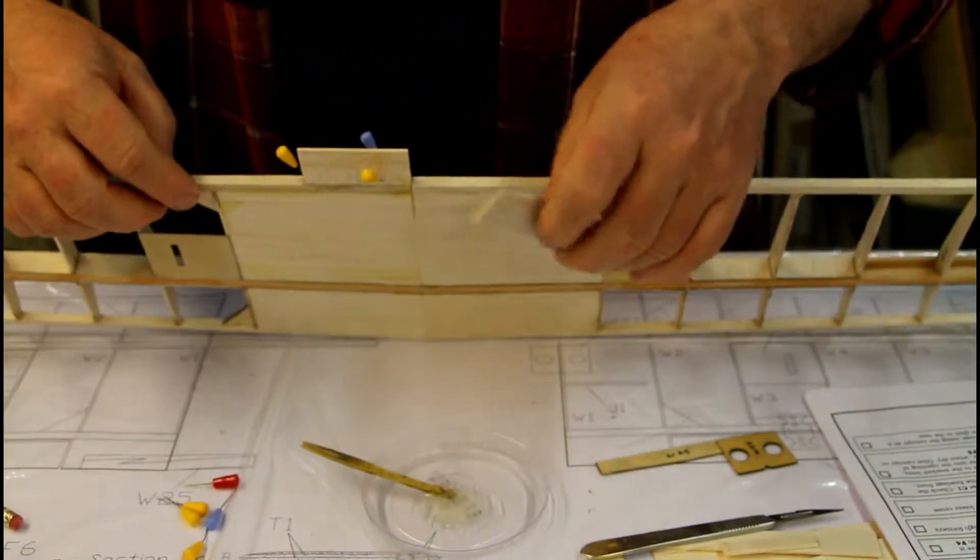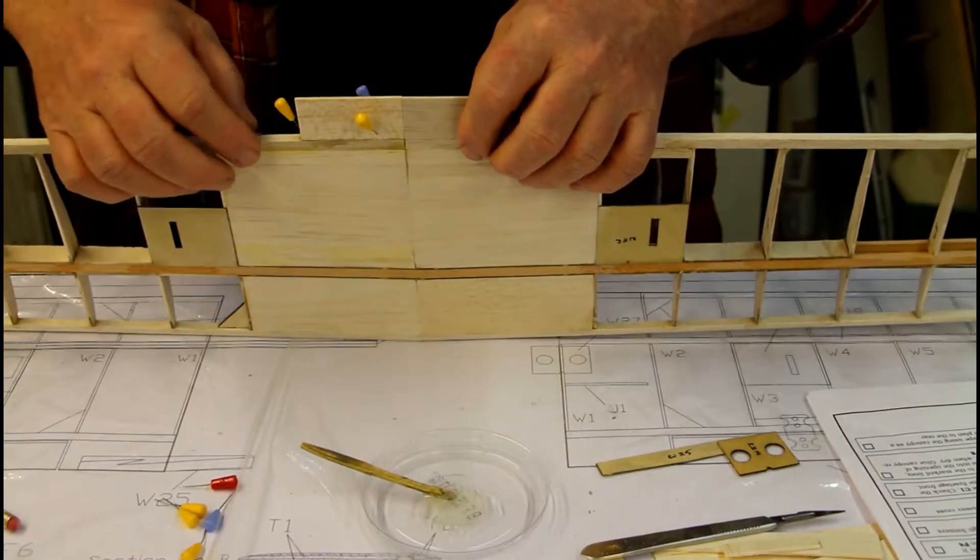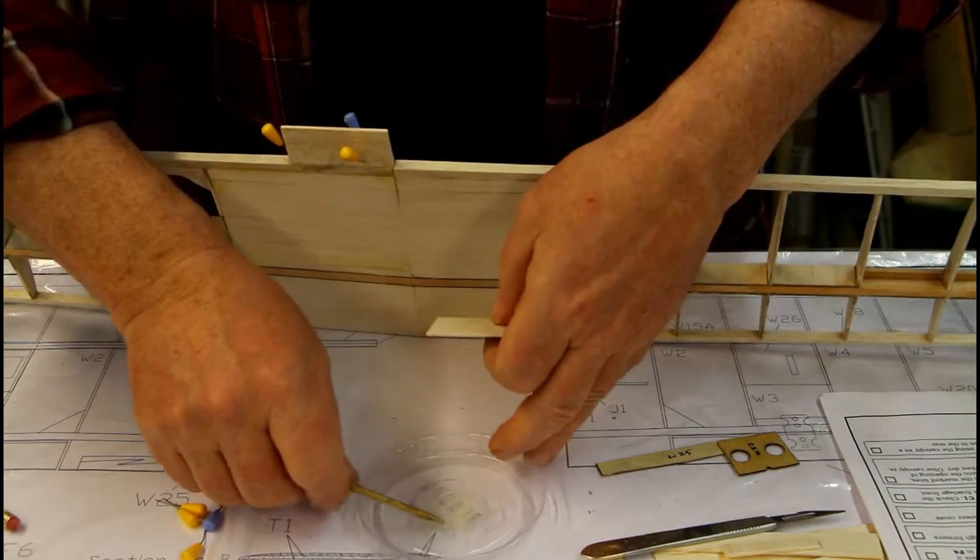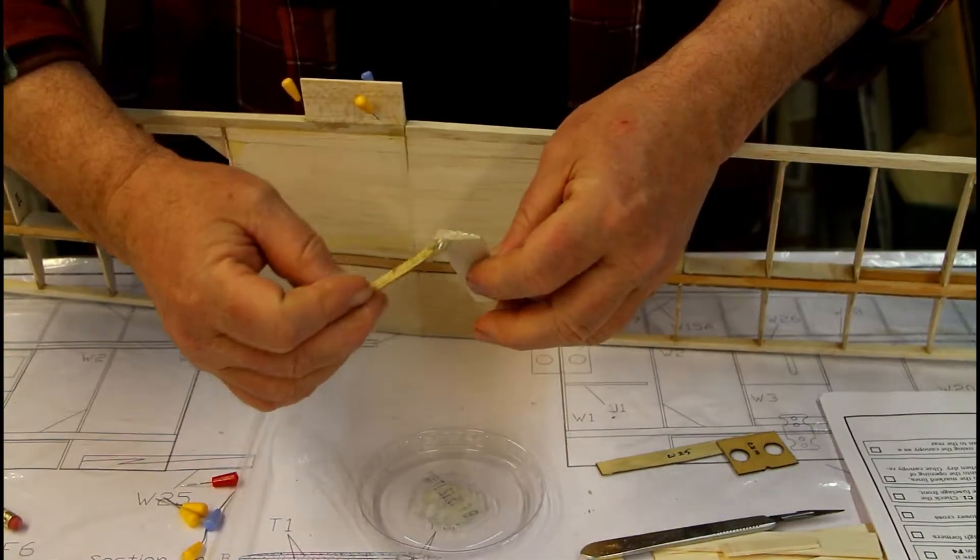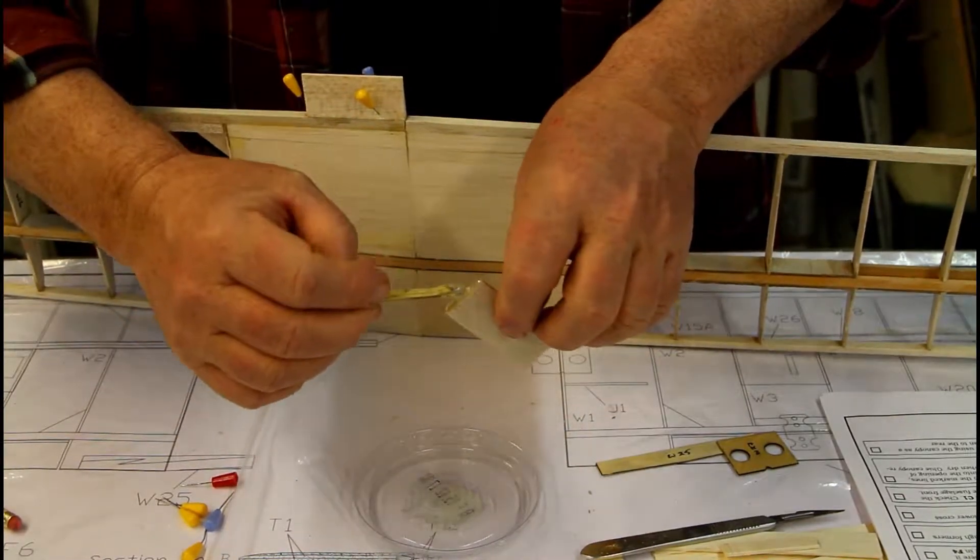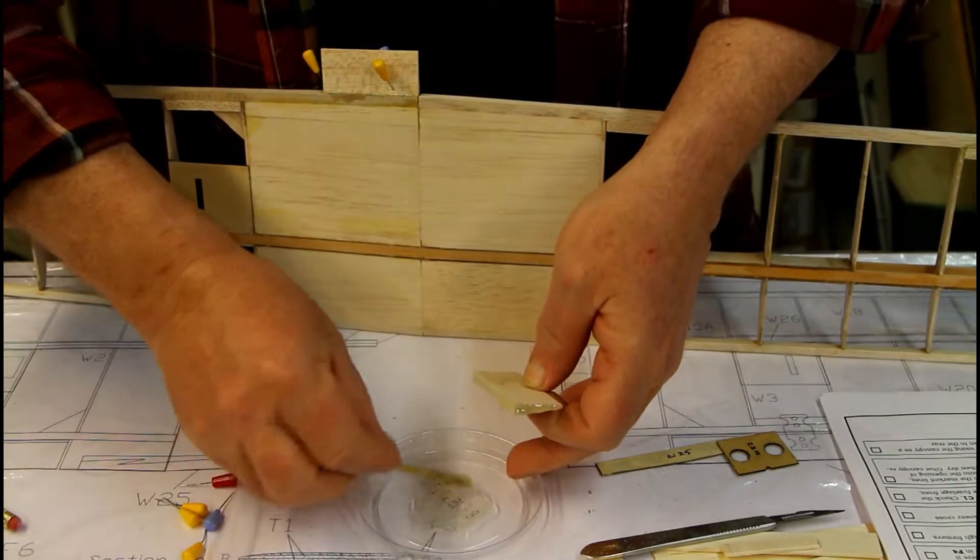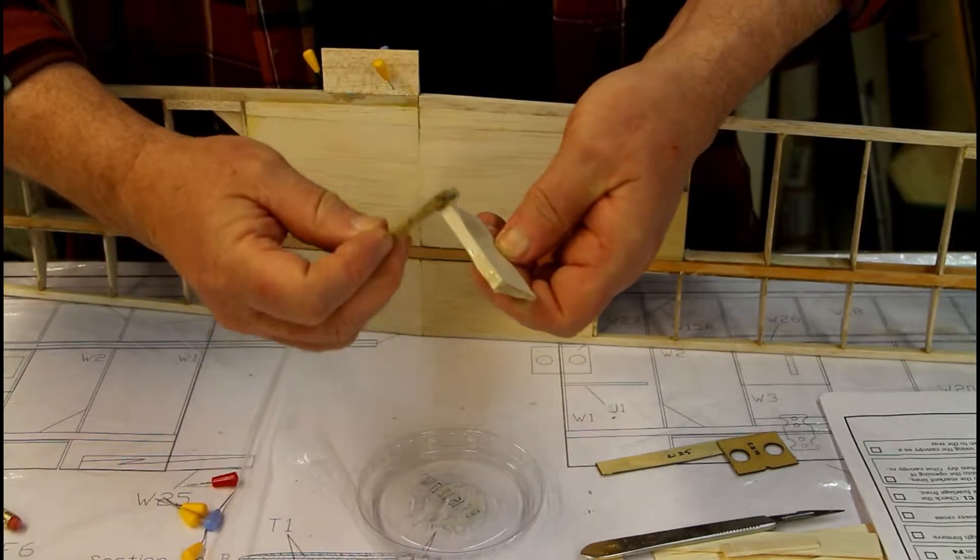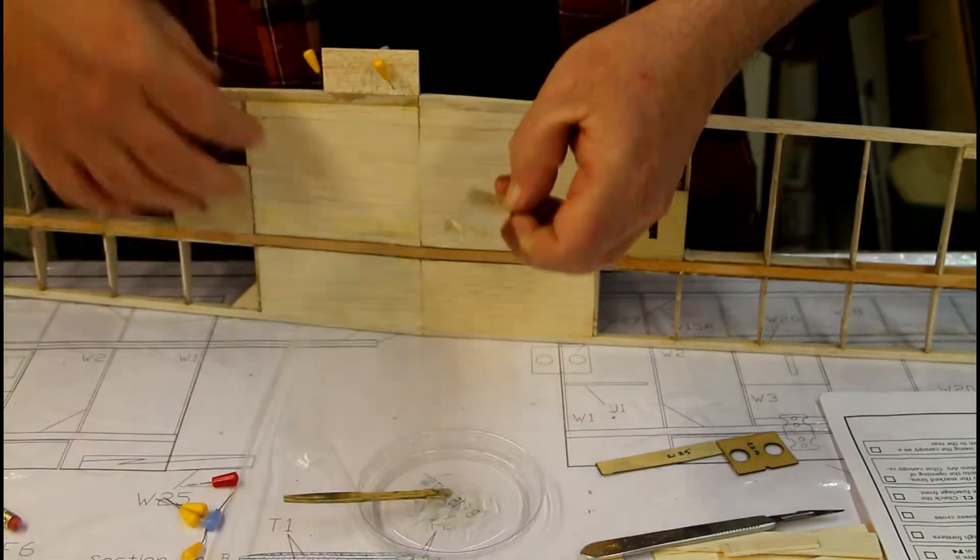Now, I'm gluing these trailing edge pieces here in the middle. And this is the only place on the wing, so far at least, where they expressly tell you to use epoxy glue. So, I'm putting some glue on this piece.